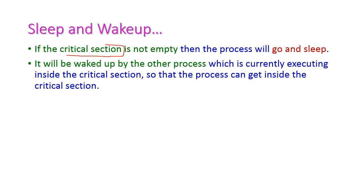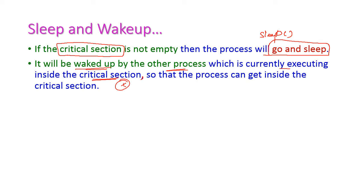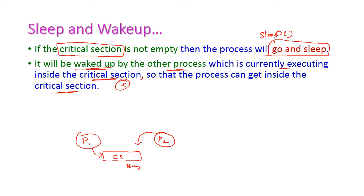If the critical section is not empty — that is, the critical section is being executed by another process — then the current process will call the sleep system call and go to sleep. The current process will be woken up by the process currently executing inside the critical section. For example, if process one and process two both want to execute the critical section, and process one is currently executing it, then process two will call sleep.